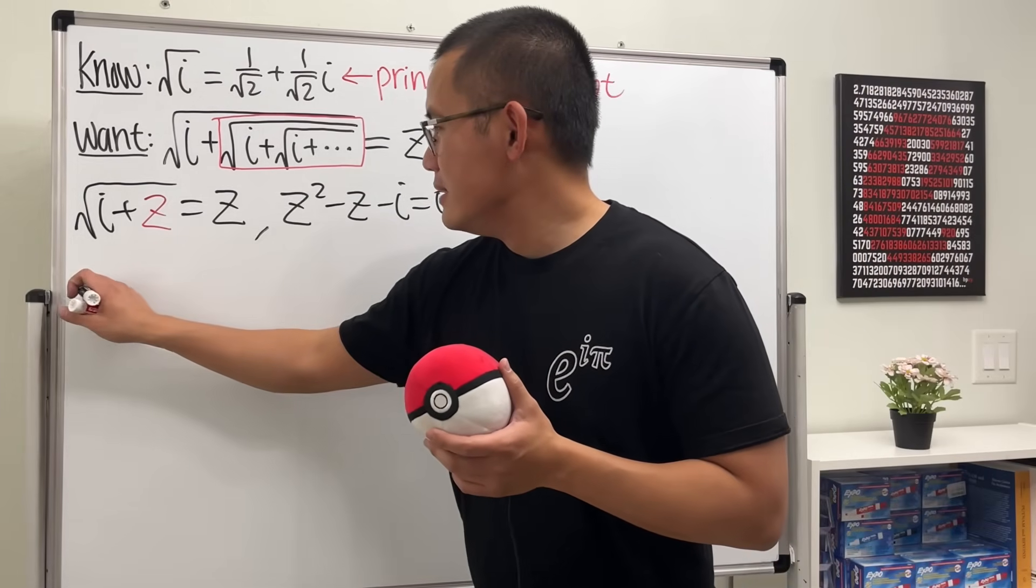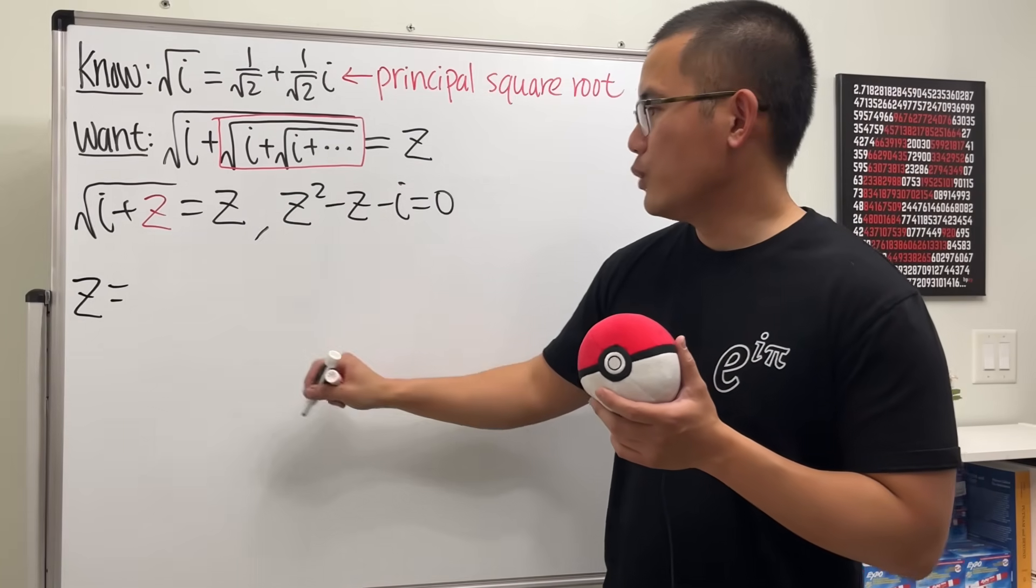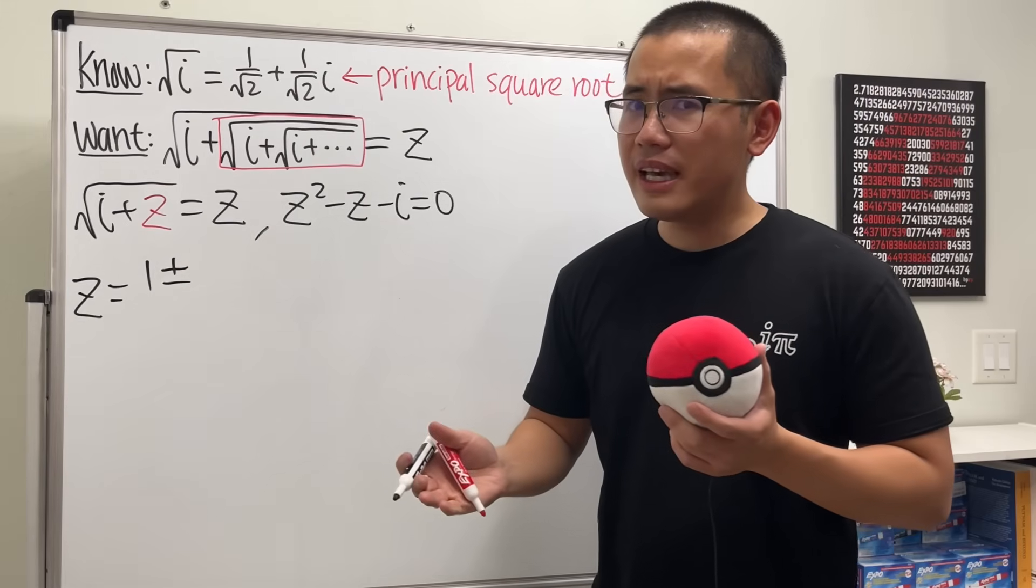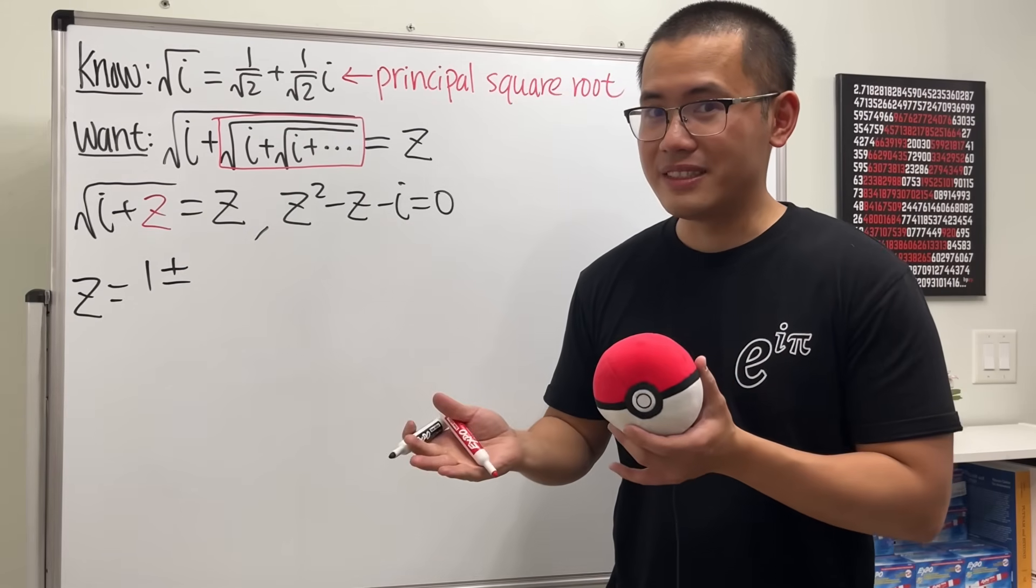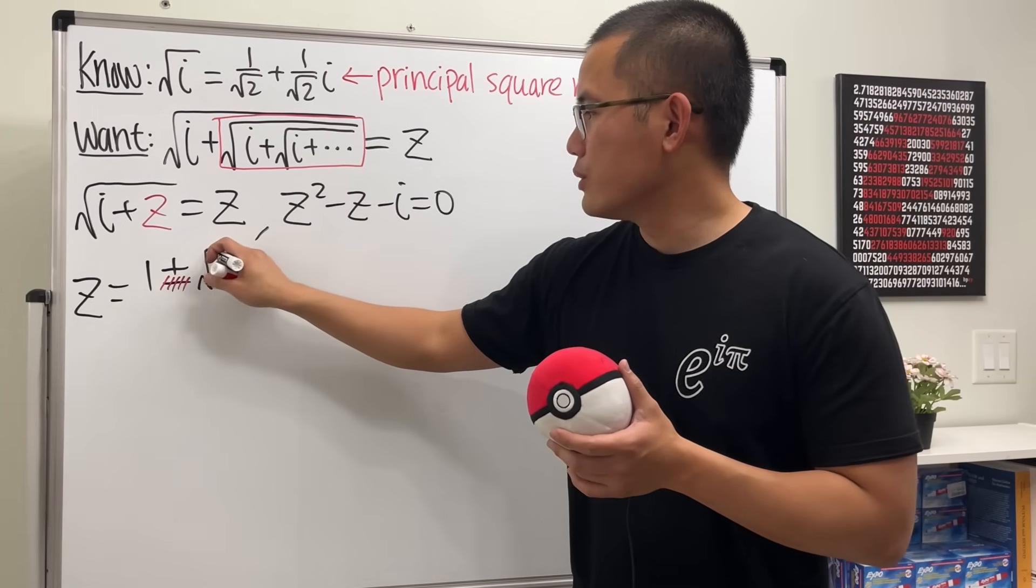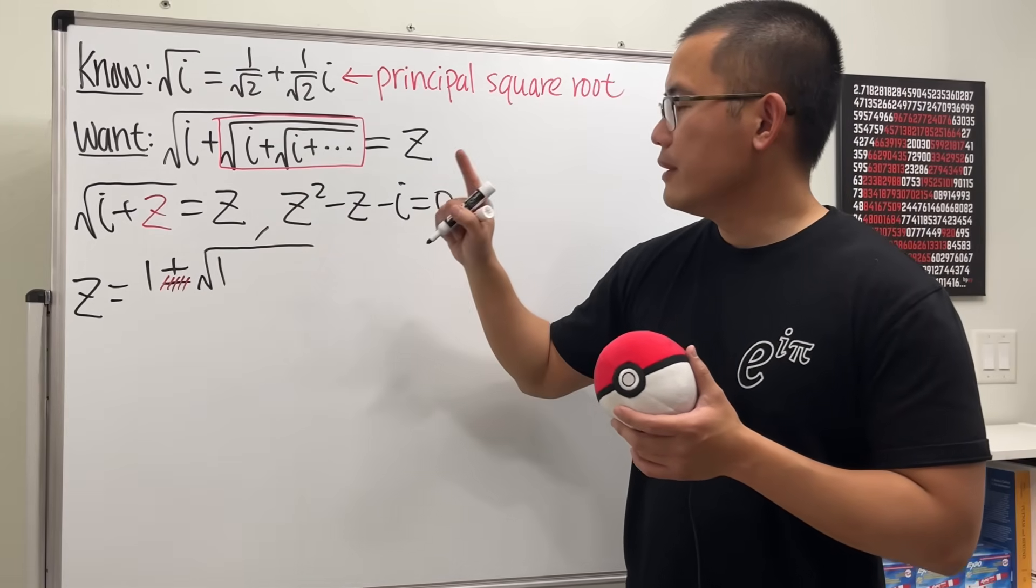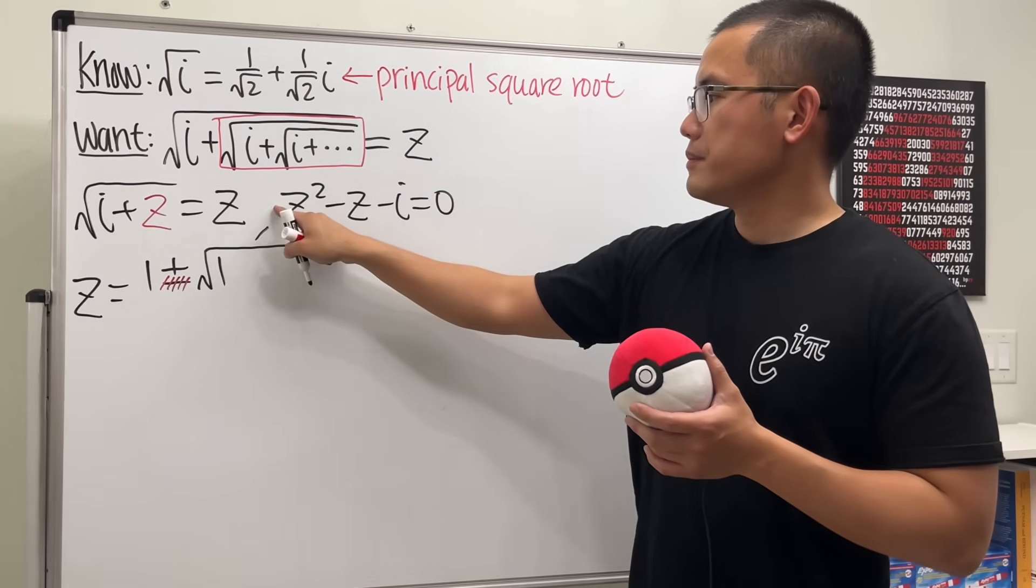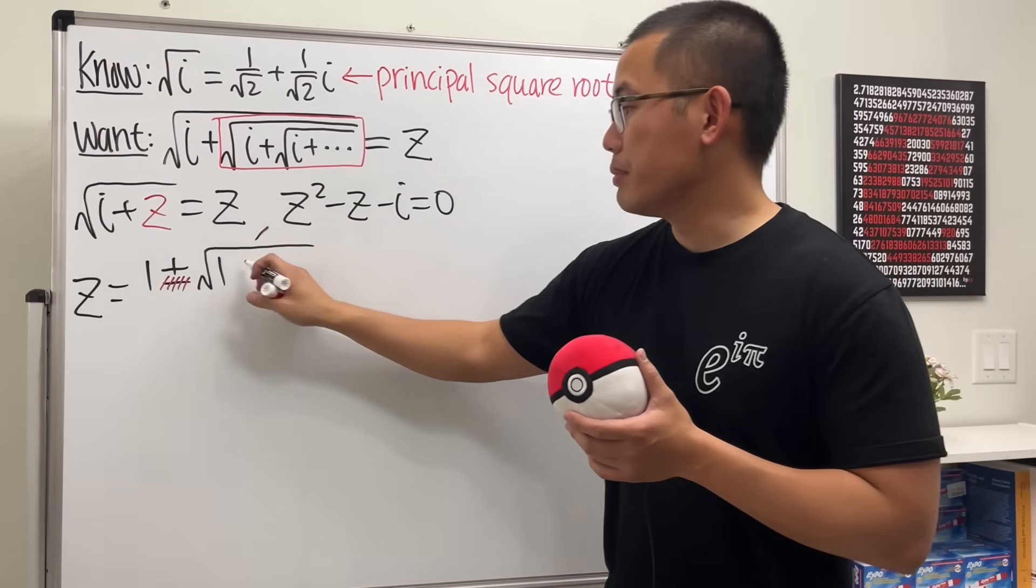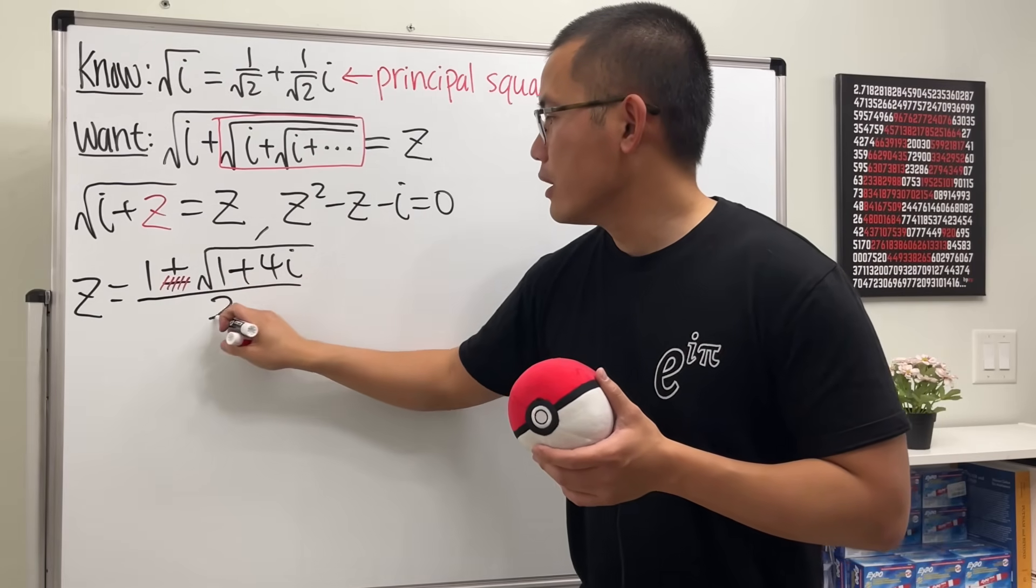Anyway, so z is equal to, and let's do this in our head, negative b, b is negative 1, so we just have 1, and then it's plus or minus, but again, we just want the first answer, right, the principal square root. So I don't want to look at the negative. And then we have the square root. b squared is just going to be 1, and then minus 4 times 1 times negative i. So it's plus 4i, and then all over 2. So that's what we have.